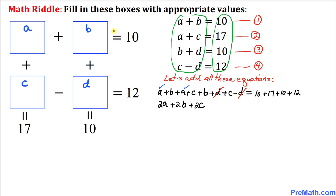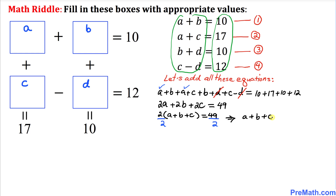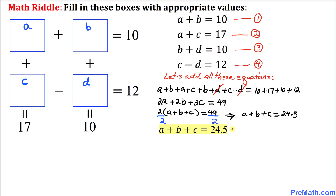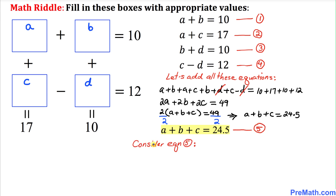The positive D and negative D cancel out. The right-hand side adds up to 49. We can factor out 2 to get 2(A plus B plus C) equals 49. Dividing both sides by 2 gives us A plus B plus C equals 24.5. I'll call this equation number 5.